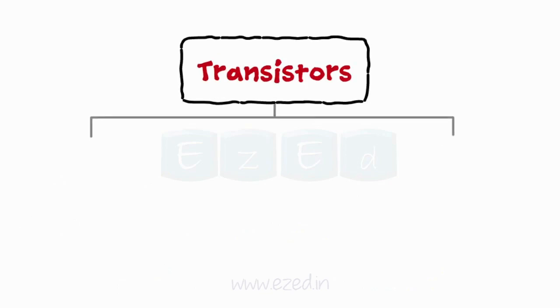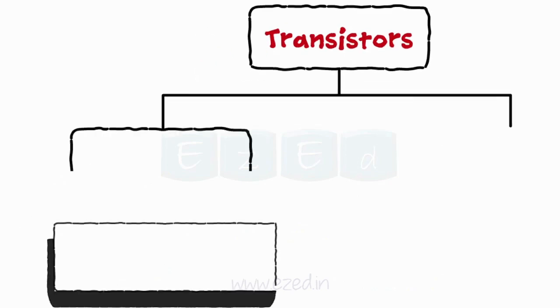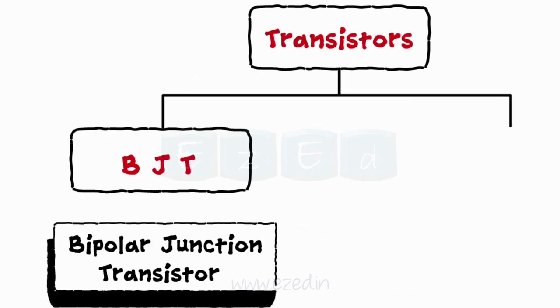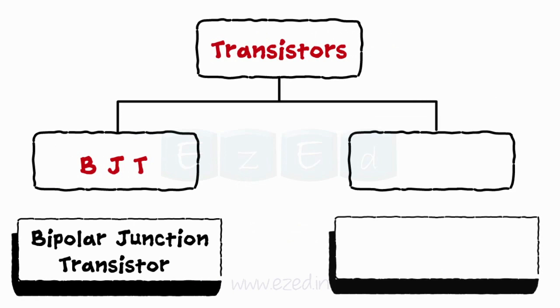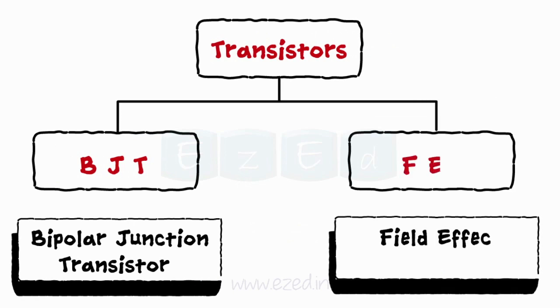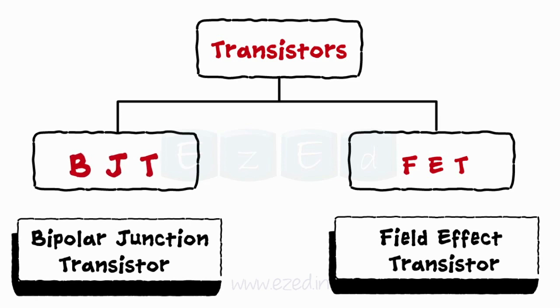These transistors are of two types: bipolar junction transistor and field effect transistor. For the time being, we will only focus on bipolar junction transistor.